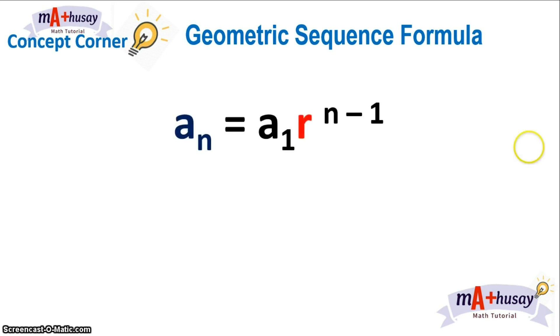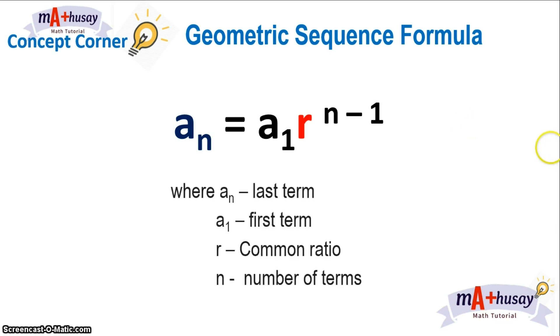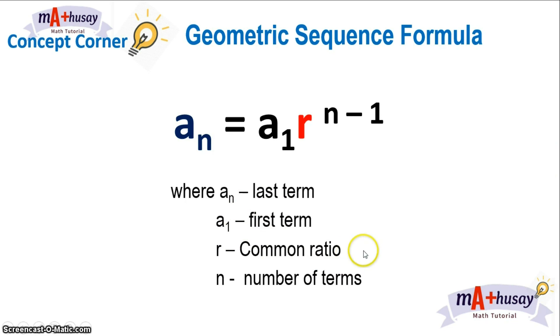In general, the geometric sequence formula is a sub n equals the first term times the common ratio raised to n minus 1. Take note that a sub n is the last term, a sub 1 is the first term, r is the common ratio, and n is the number of terms in the given sequence.